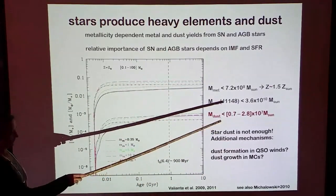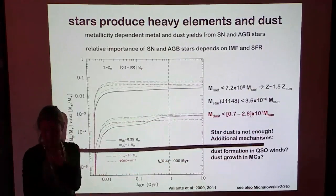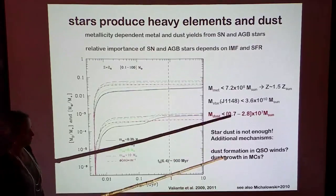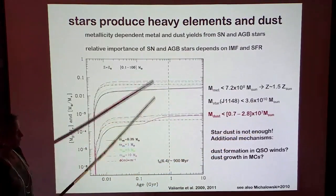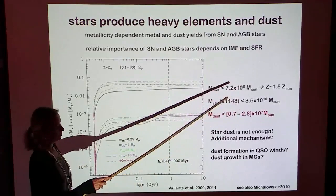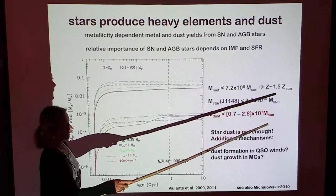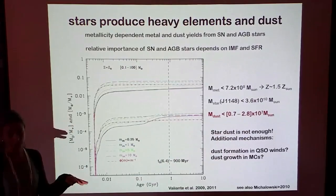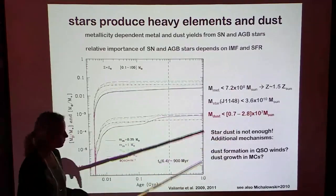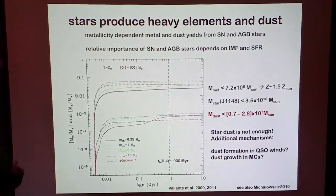If you concentrate on J1148, the upper limit on the stellar mass taken from the difference between the dynamical mass and the H2 mass gives you a back-of-the-envelope calculation showing that the mass in metals at redshift 6.4 is of a certain order of magnitude. Dividing by the inferred H2 mass gives supersolar metallicity, but the mass of dust is about an order of magnitude smaller than what you need to explain the far-infrared emission.